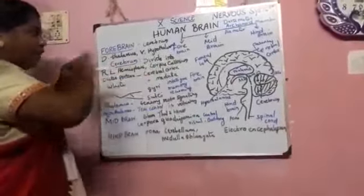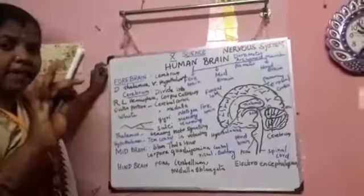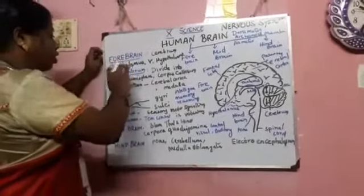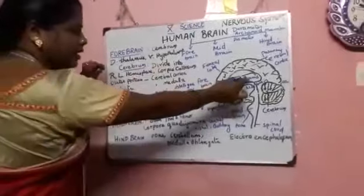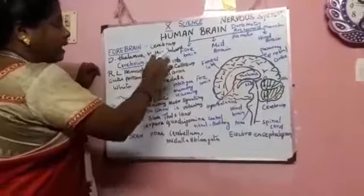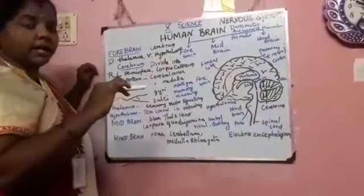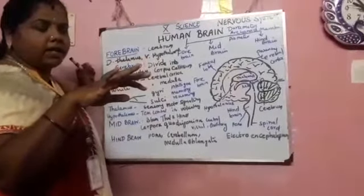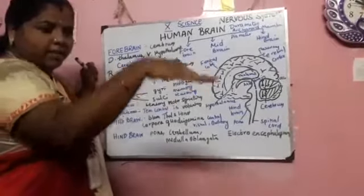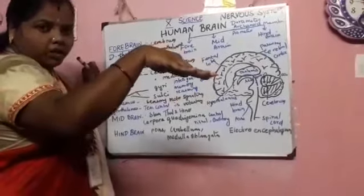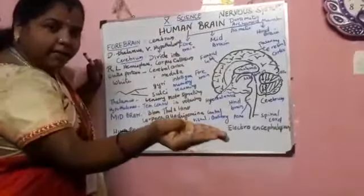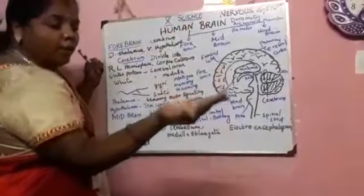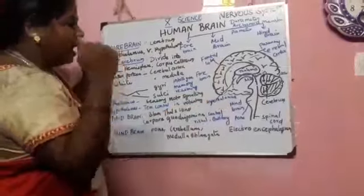The forebrain is made up of the cerebrum and the dorsal side of the thalamus. The dorsal side is the thalamus, and the ventral side is the hypothalamus. So if it is the outer covering it is dorsal, and the inner covering will be the ventral side. So the dorsal will be thalamus and the ventral will be hypothalamus.